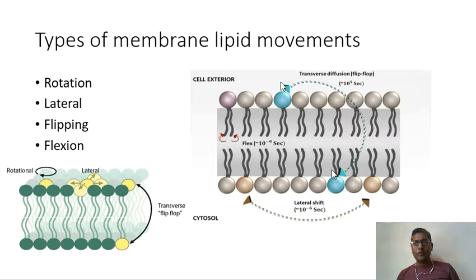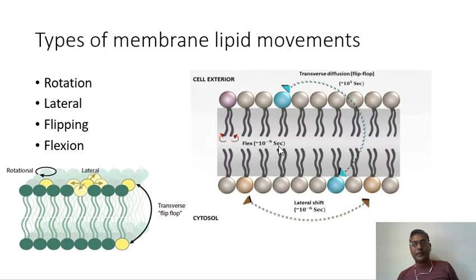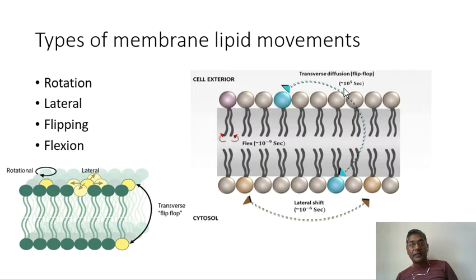These movements are measured in particular time scales. A flexion — that is, the tail of the phospholipid would flex — takes around 10 to the power of minus 9 seconds. A lateral shift can take place in 10 to the power of minus 6 seconds. And transverse diffusion can take place in 10 to the power of minus 5 seconds.